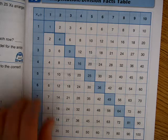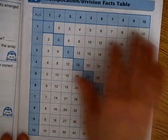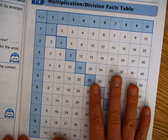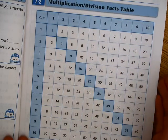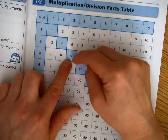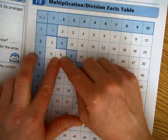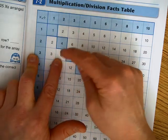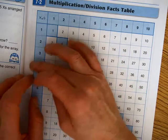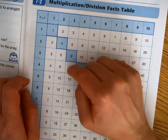We want students to be able to identify factors, products, square numbers, and patterns in this multiplication and division facts table. We also want them to use the table to generate fact families — for example, 3 and 2 are a fact family for generating 6, so 3, 2, and 6 are all a fact family. Or 4, 3, and 12 will be a fact family, knowing that the first two are factors and the last is the product.